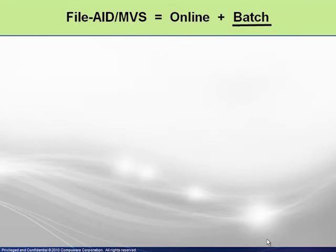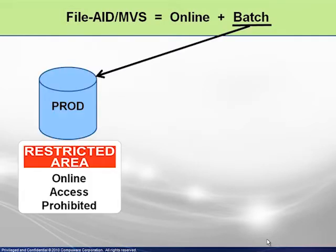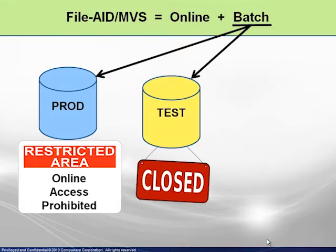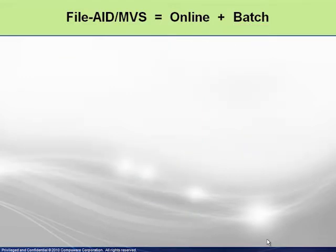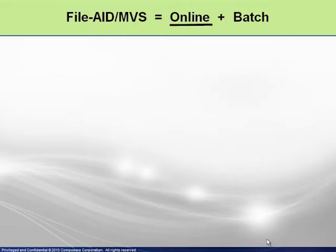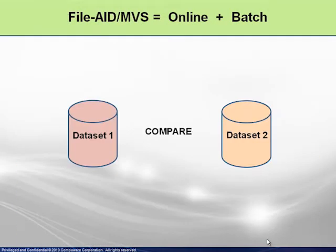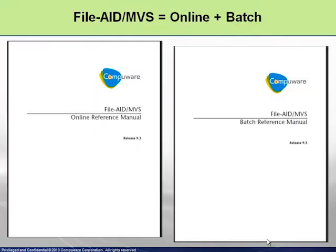For new and first-time users, FileAid MVS has two components: online and batch. Batch processing is suitable when online access to production files is restricted, when online access to test files is limited to off hours, or when updating extremely large files. Some functionality such as full screen editing is of course available online only, while other functionality such as file compares may be set up online and run either online or as batch jobs. The full reference manuals for both components are downloadable from Frontline.